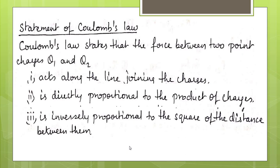This is the statement form of Coulomb's law. Coulomb's law states that the force of attraction or repulsion between two point charges Q1 and Q2 acts along the line joining the charges. It is directly proportional to the product of the charges and inversely proportional to the square of the distance between them. If both charges are positive or both negative, the force is repulsive; if one is positive and the other negative, the force is attractive.